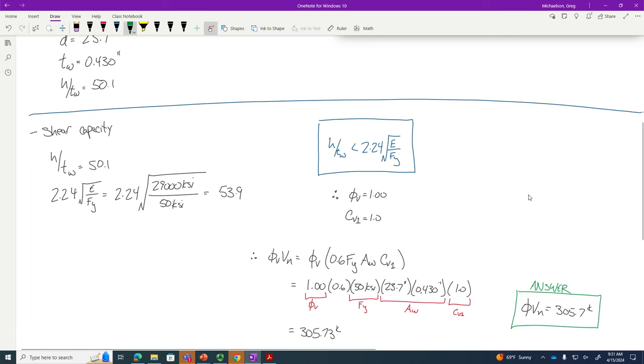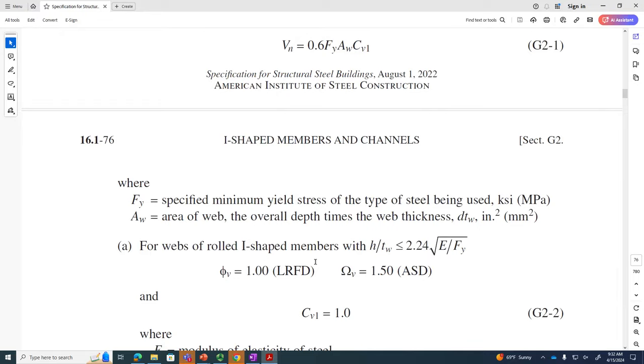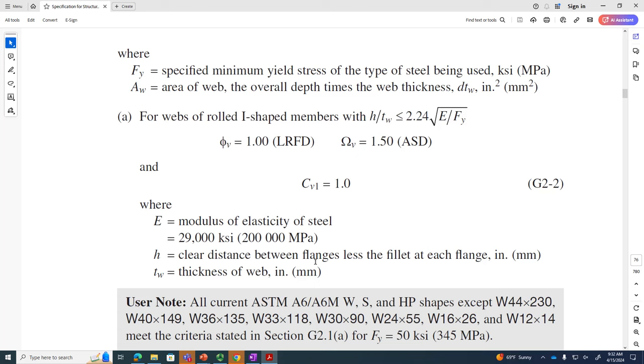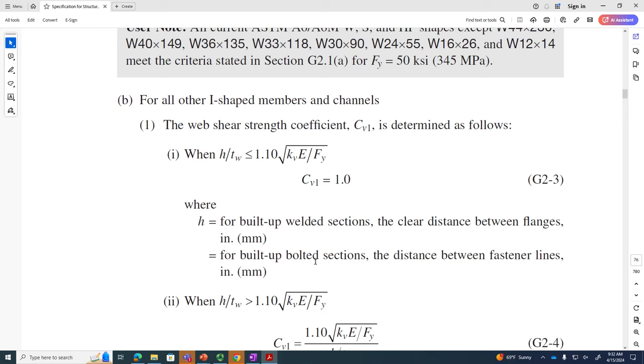Now I'll show you something real quick. I want to just show you something. Let me do this. Let's just read this. For webs of rolled I-shaped members with H over TW being less than that, we get a CV value of 1. So basically what this is saying is that the web is stocky enough such that we don't need to consider shear buckling. But I want to show you something a little bit down here. It says for all other I-shaped members, we have the following. And it says when H over TW is also less than this, CV is 1. So I want to take a look at this real quick. And I just want to show you why this is important.